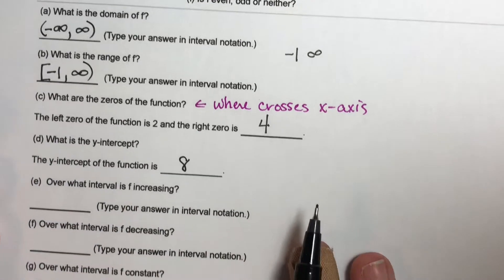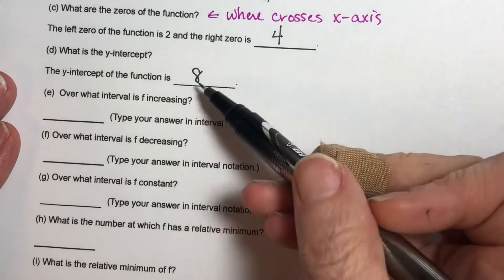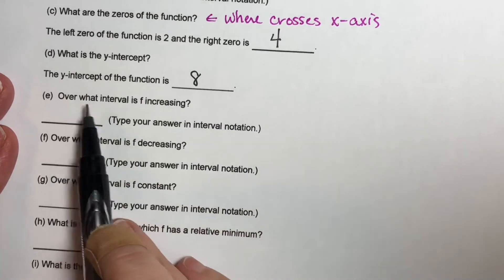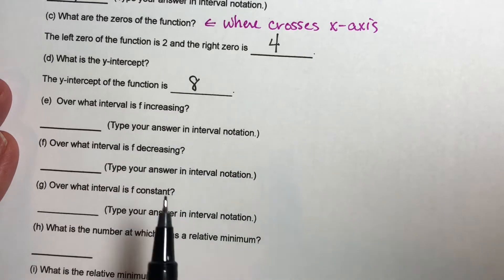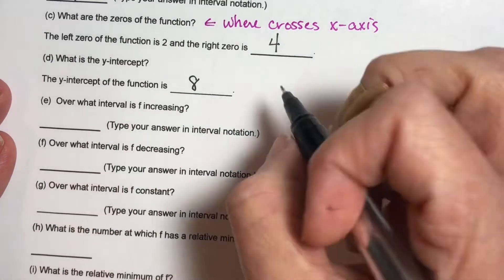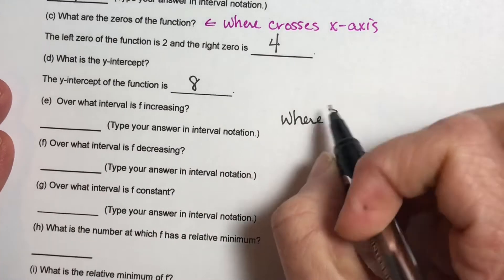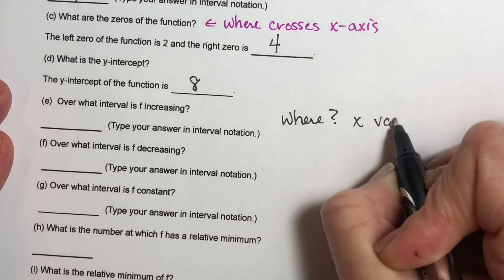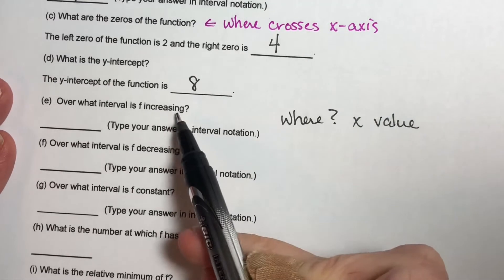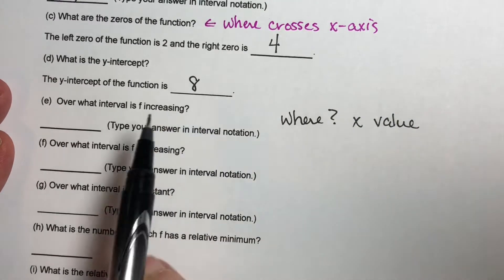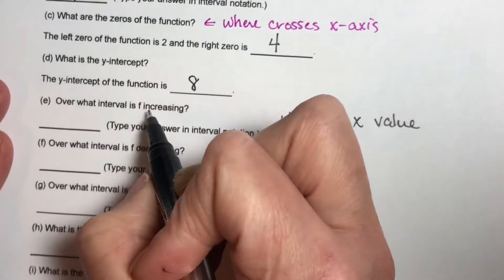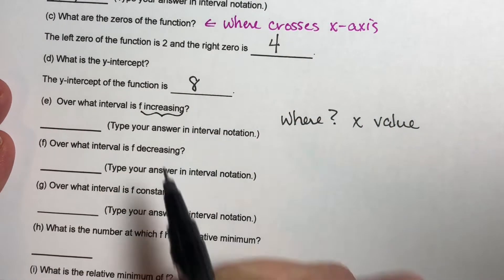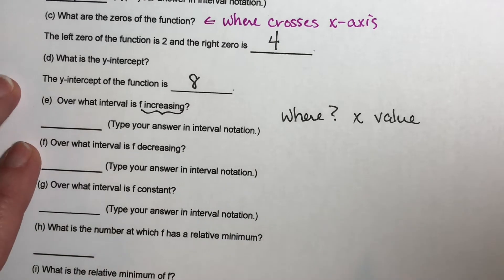Now for the increasing, decreasing, and constant bits, we are asked where it is increasing, where it is decreasing, where it is constant. When we're asking where, that's your x value. We know our y value would be increasing here. That's the y is changing and is included or implied by this word. And then decreasing the same, constant the same.